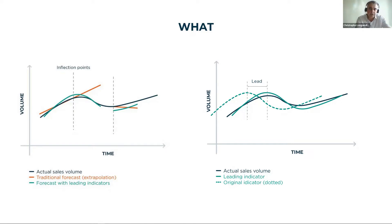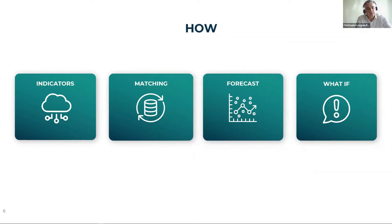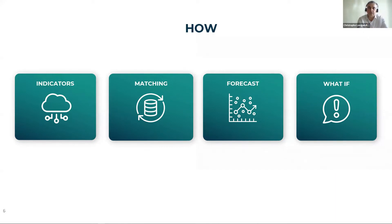To summarize the approach: first, we have this database of 10 million indicators, synchronized almost in real time with all leading databases in the world. We can also add industry-specific databases and integrate them into our main database. Following that, we do a matching process with your own sales or the phenomenon we want to forecast, building a predictive model with the relevant leading indicators identified. Then we build models for your business units, and finally we construct scenarios to simulate the evolution of leading economic indicators, allowing us to look one year or more into the future.